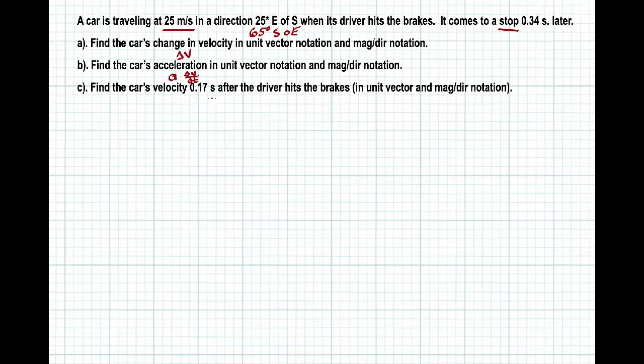So let's go back to our original statement. The car that's traveling at 25 meters per second at what we said was 65 degrees south of east. That's going to look something probably kind of like this. Here's our car. It doesn't say anything about turning or anything, so it's just coming to a stop in a straight line. So the initial velocity, v initial, is 25 meters per second at 65 degrees south of east.